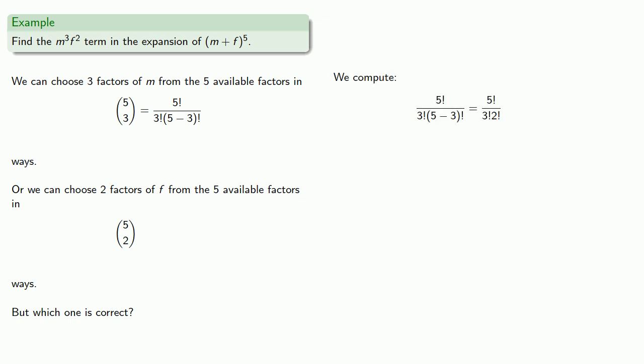5 factorial is the product of the numbers from 1 through 5. 3 factorial is the product of the numbers from 1 through 3. And 2 factorial is the product of the numbers from 1 to 2. We'll remove the common factors and simplify to get 10.